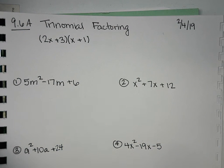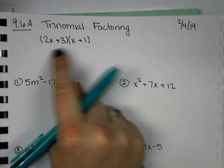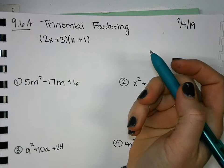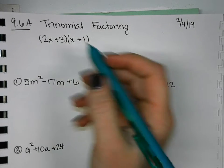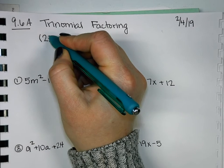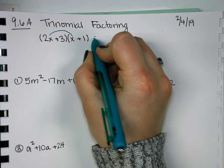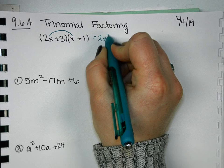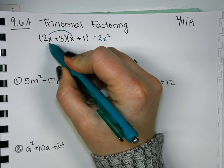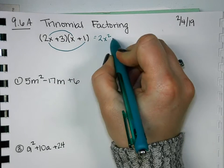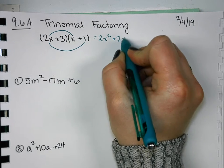So let's start by multiplying these two binomials together. How did we do that? Double distribute. So we did 2x times x, and we got 2x squared. Then we did 2x times 1 to get 2x.